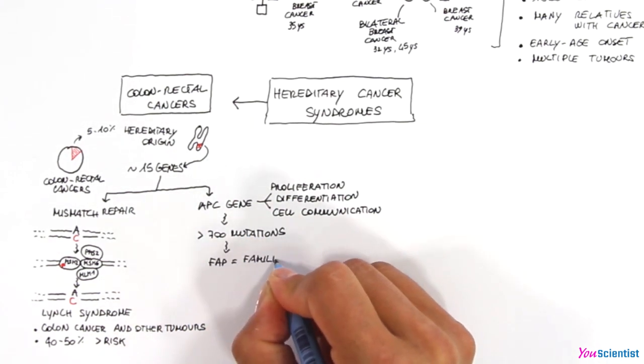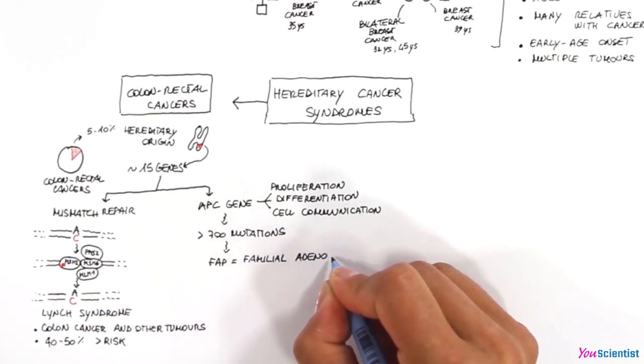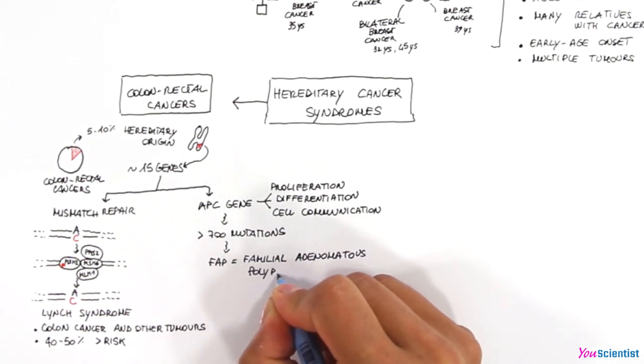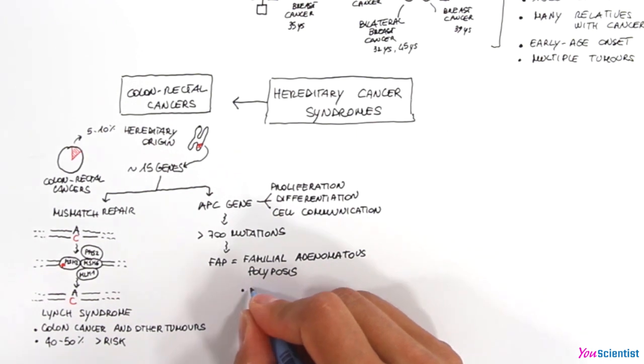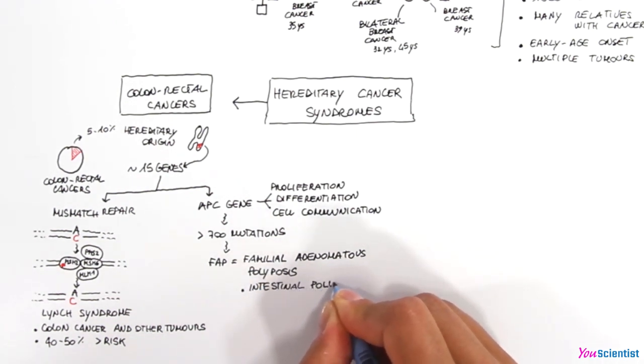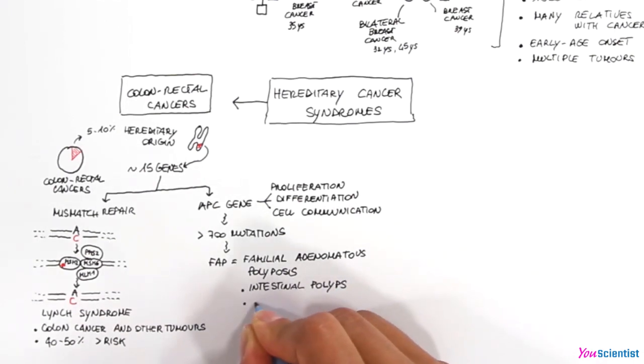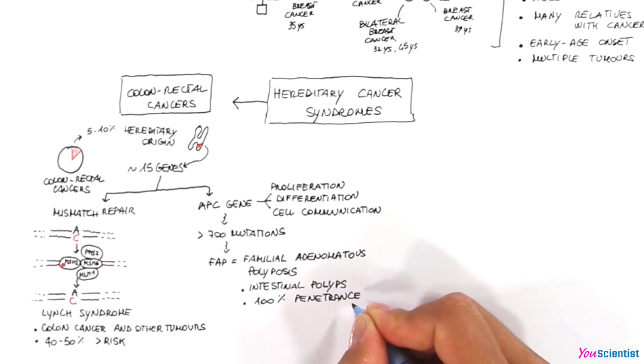They are associated with FAP syndrome, the familial adenomatous polyposis. Mutations in APC gene cause the formation of hundreds of polyps in the colon of the patient, and some of them will become cancer. This genetic condition has 100% penetrance, meaning that all the people that carry the mutation will develop the disease.